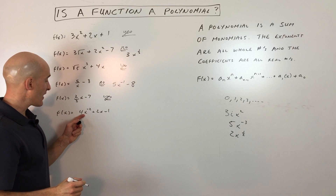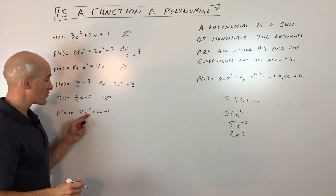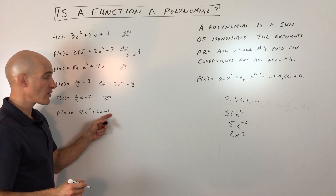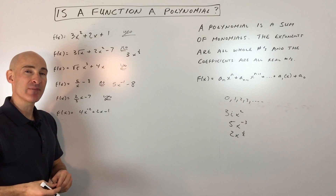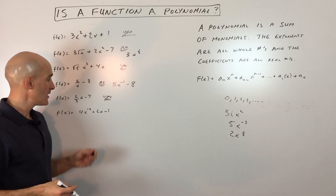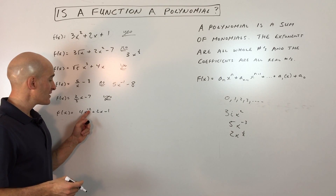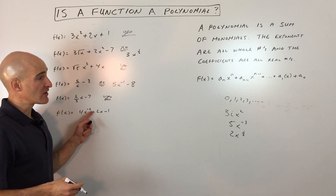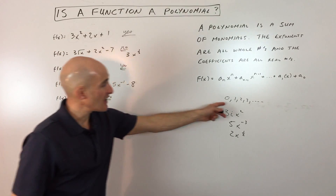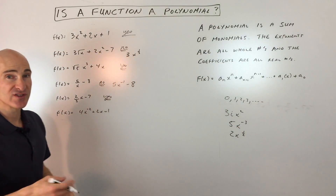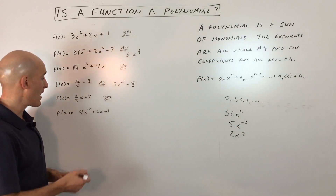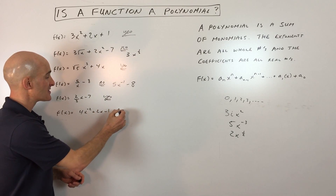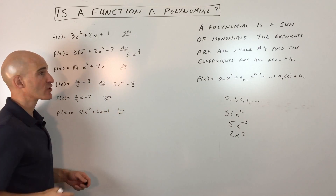And the last one: f(x) = 4x to the negative 2 + 2x - 1. Is that a polynomial? We've got a negative exponent, and the exponents have to be whole numbers — 0 or positive integers. So this one is not a polynomial.